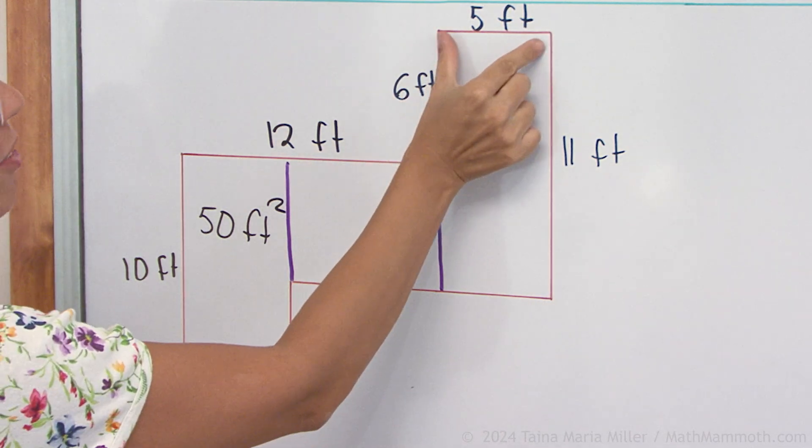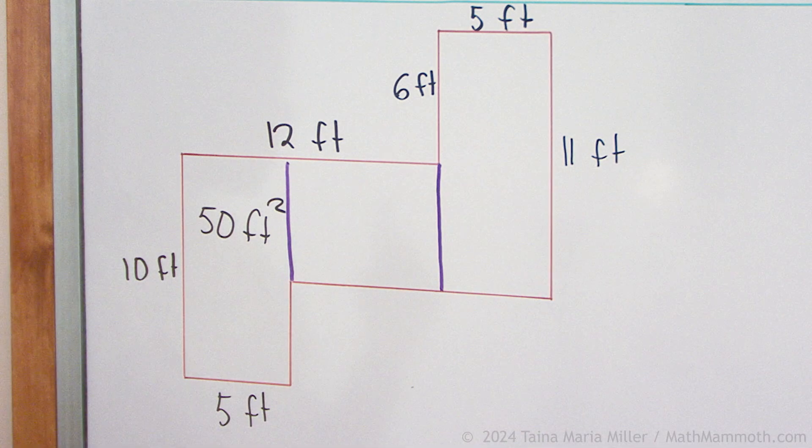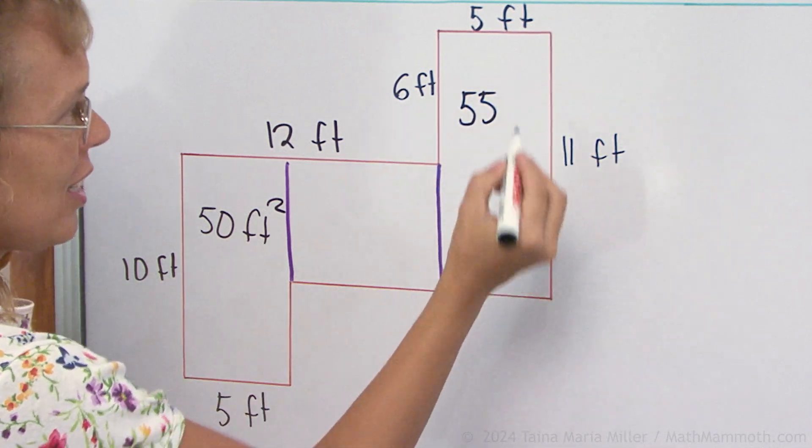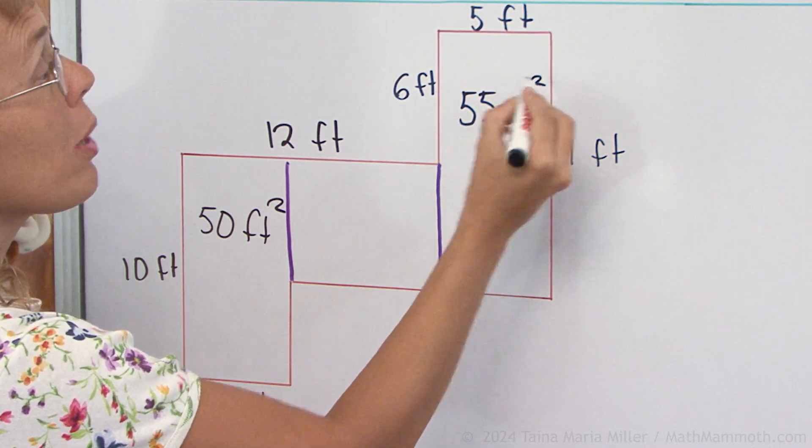Let's figure this one. This one has 5 feet and then 11 feet. So 5 times 11, 55. And then again the unit is square feet.